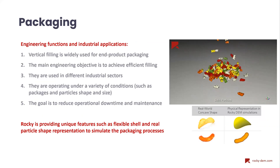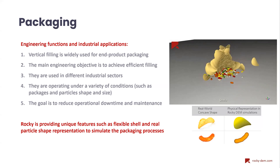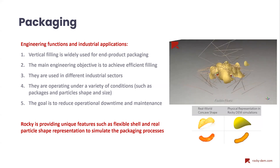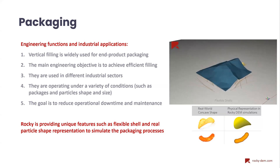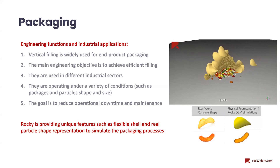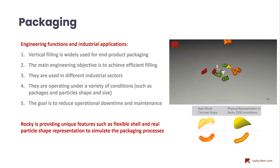Rocky DEM provides a set of tools to enable this simulation. The most important one is being able to represent the real shape of the particles. In Rocky we can have different forms of particle shapes — for example, custom shapes for food materials that you can import, rigid shell particles like potato chips, flexible fiber elongated fiber materials, and also flexible shell particles which can be used to represent the package itself.